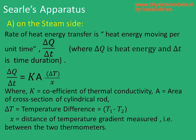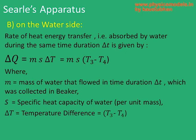Now let's come to the equations. We start with the steam side: the equation delta Q by delta T, which is the thermal energy current, equals K times A times delta temperature divided by x. This x is the same x as in the image. The delta temperature on the steam side is T1 minus T2. The rod is hotter on the steam side and becomes cooler as we go towards the right, therefore T1 minus T2 is positive. On the water side, the water absorbed that heat because we insulated everything. So delta Q equals mass times specific heat times increase in temperature, where the increase in temperature of the water is T3 minus T4.